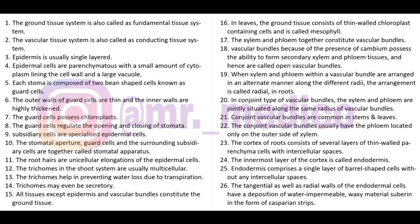Radial vascular bundles are found in roots. In conjoint type of vascular bundles, the xylem and phloem are situated along the same radius. Conjoint bundles are common in stem and leaf. In conjoint bundles, the phloem is generally located on the outer side of the xylem.